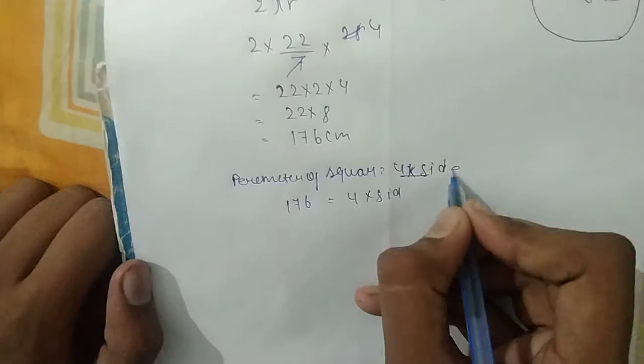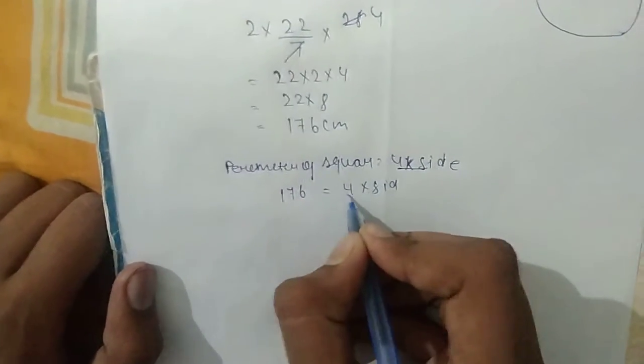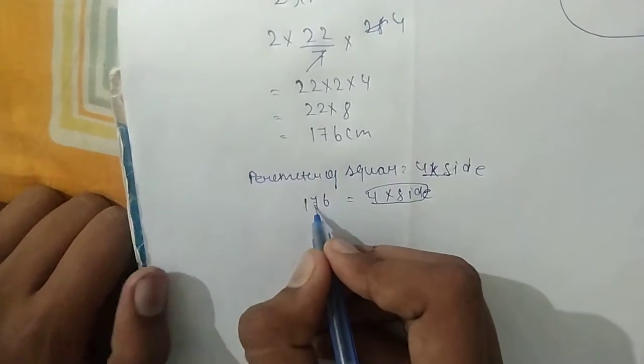176, perimeter of square, 4 into side, 4 into side. 176.